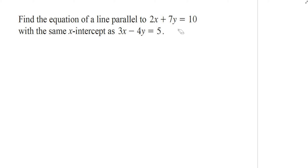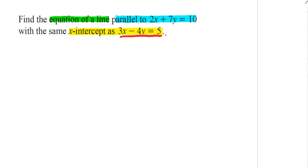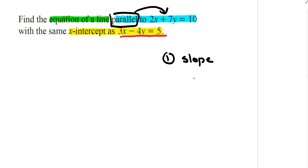Question number 8 is similar to question 6, except this time we're given the x-intercept. The goal is to find the equation of a line parallel to 2x plus 7y equals 10 and having the same x-intercept as 3x minus 4y equals 5. First, I'll find the slope.